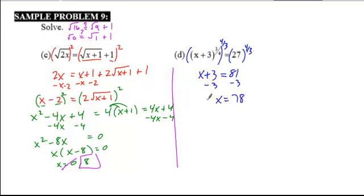We want to check that and make sure it works. 78 plus 3 is 81. We want to see, is 81 to the 3/4 equal to 27? The fourth root of 81 is 3, 3 cubed is 27, so yes, it checks. Our solution is 78.